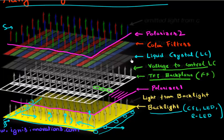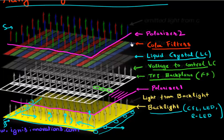The next layer on top of the TFT backplane is the liquid crystal. These liquid crystals, when you apply a voltage on them, can manipulate the polarization of the light — they can either bend the polarization of the light coming in, or do nothing to it, depending on whether it's on or off. On top, we have color filters which determine whether the pixel is red, green, or blue. All the backlight coming from below is white, and the only way you define colors is by passing that light through these color filters.